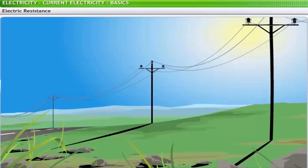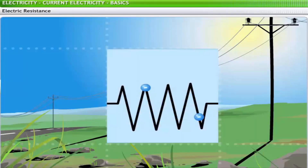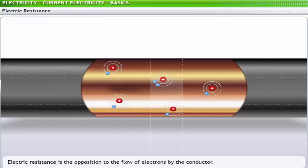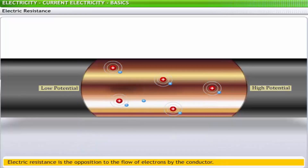In addition to potential difference, electric current is impacted by another factor called electric resistance. The electrons in a conductor do not travel in a straight path from one end to the other. While moving across the conductor, the electrons collide with fixed atoms within the conductor, encountering hindrance in their movement. This hindrance, or opposition to the flow of electrons, is called electric resistance. While the electric potential difference between two terminals encourages the movement of charge, resistance discourages it.